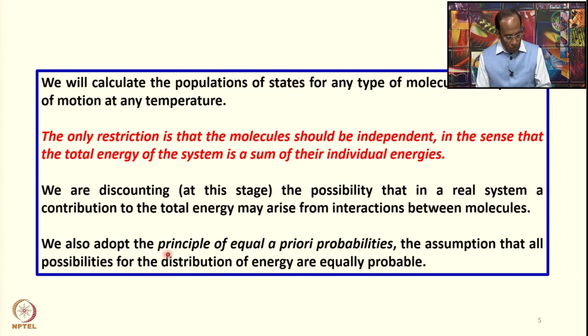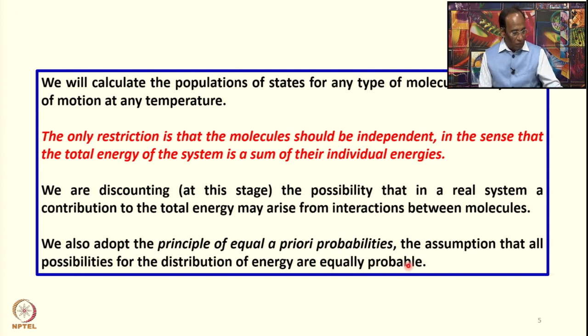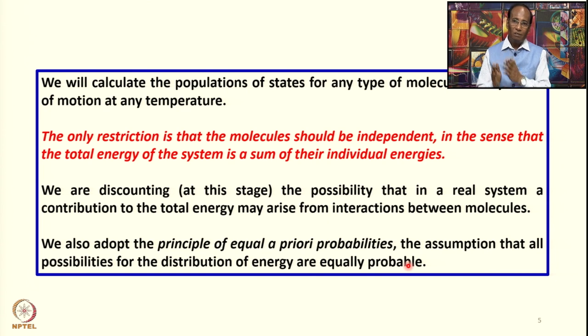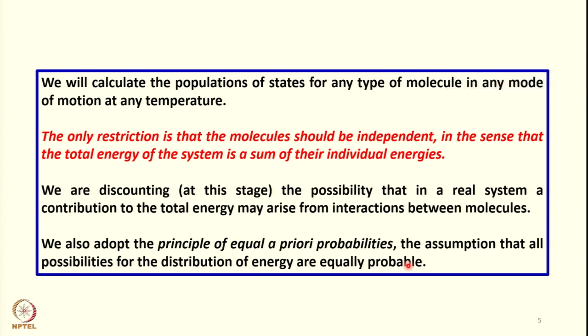We also adopt the principle of equal a priori probabilities — the assumption that all possibilities for the distribution of energy are equally probable. Whenever we start building theories, we list down postulates under which the developed equations will be valid. These are the restrictions we impose at this time so that the equations we develop are valid under those conditions.